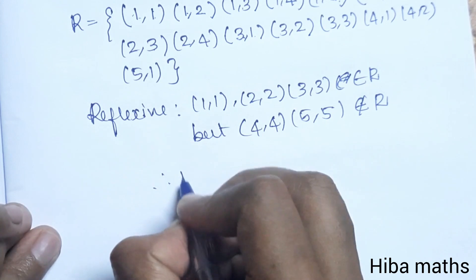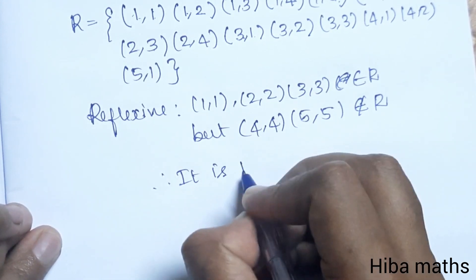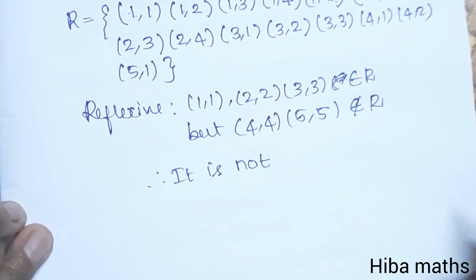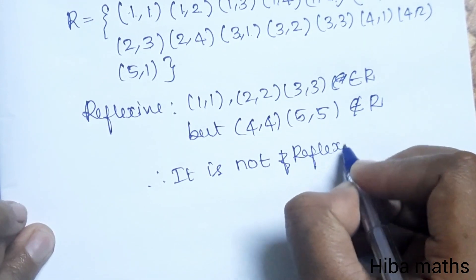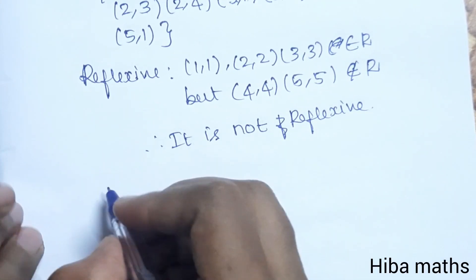Now we check symmetric. For symmetric property, if (a,b) is in R, then (b,a) must also be in R.